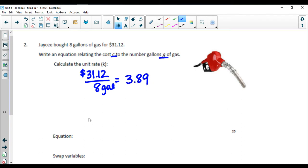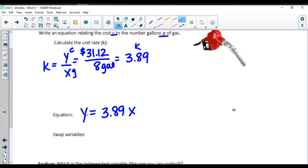So your unit rate is K. Your equation Y equals K, which is $3.89X. Keeping in mind when we did this before, we were doing Y divided by X. That's how we got our K. Y is our money, which is our cost. And X is our gallon, which is actually going to turn to G. So we're going to swap out the variables. In place of Y, we're going to put C for cost. And in place of X, we're going to put G for gallons.